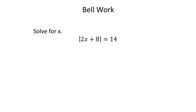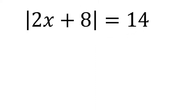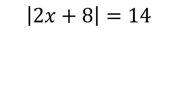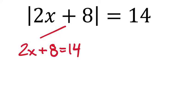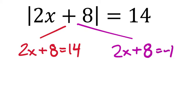For the bell work, we have this absolute value equation to solve. It's all about the inside. We're going to break this up. If I can get 2x plus 8 to equal 14 on the inside, that's a true statement. But if I can get 2x plus 8 to equal negative 14, I'll still have a true statement because it would be the absolute value of negative 14.